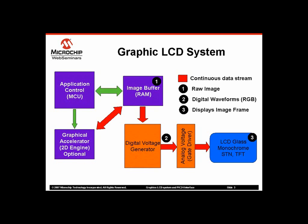The MCU needs to run a graphics library to achieve high-quality graphics. This library will take simple inputs like the size of a button, color, and a few other parameters, and figure out which pixel should be displayed in which color to create the required image. This process is called software rendering.